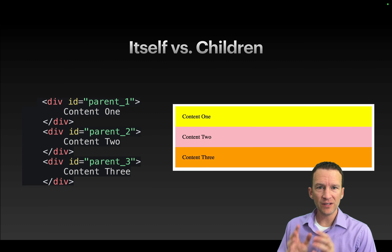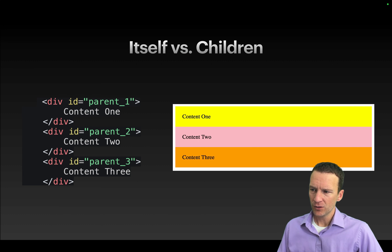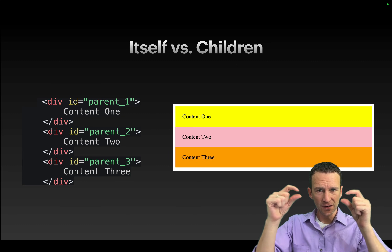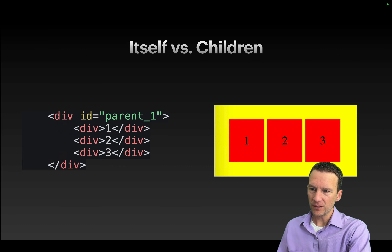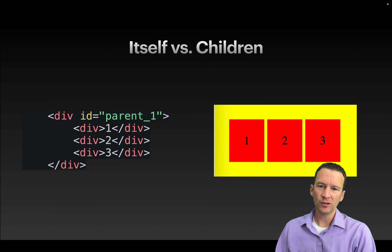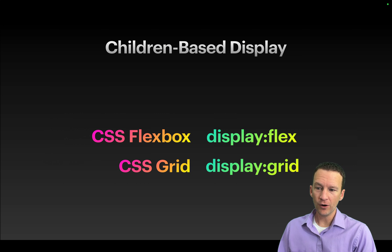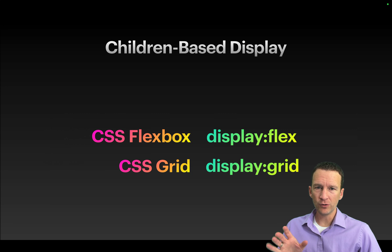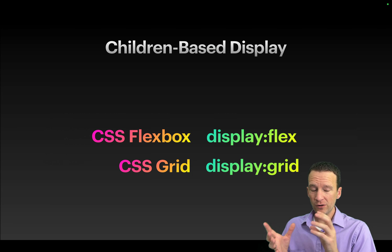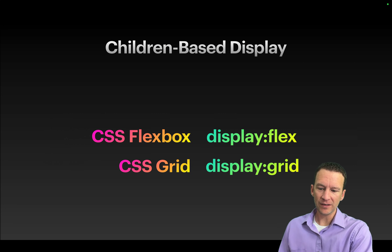Everything we've touched on so far has the display property affecting the element itself. But there are occasions where you may want the display to affect the children instead of the parent. That's where the two new CSS layout methods come in — display flex and display grid. Changing display to either of those tells the layout engine to render the children of the parent differently.